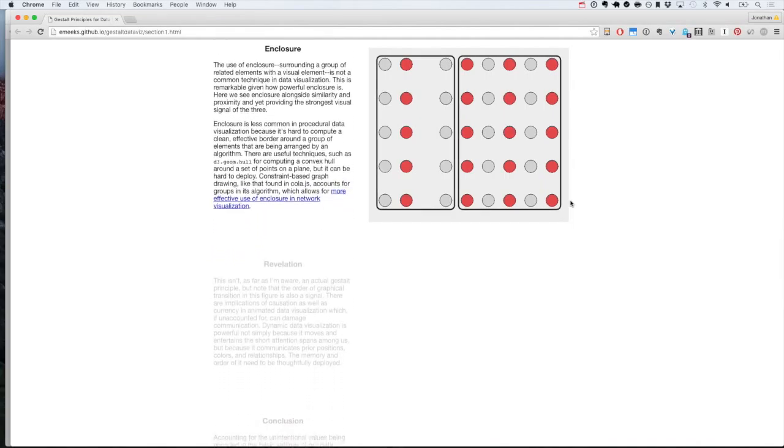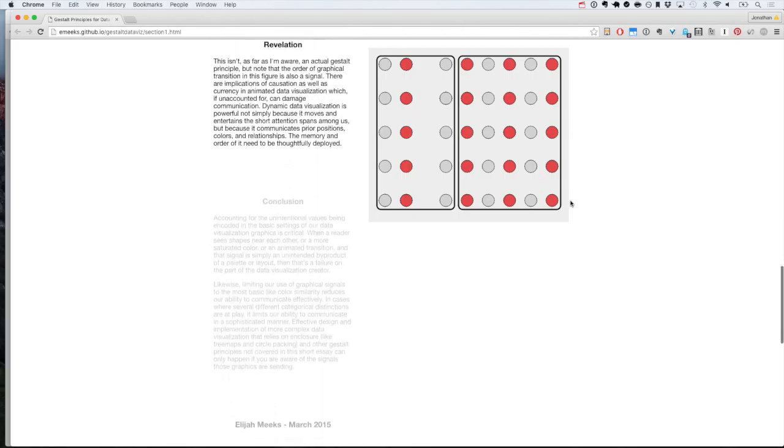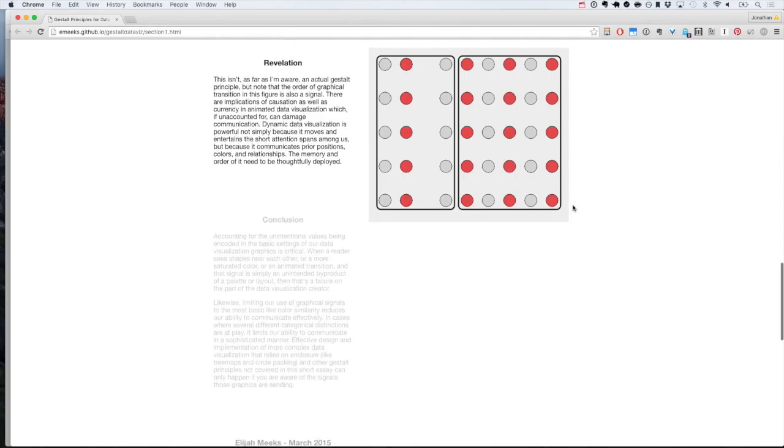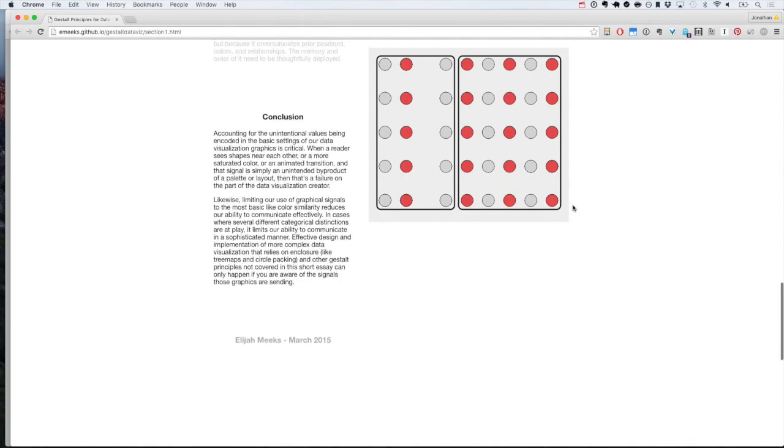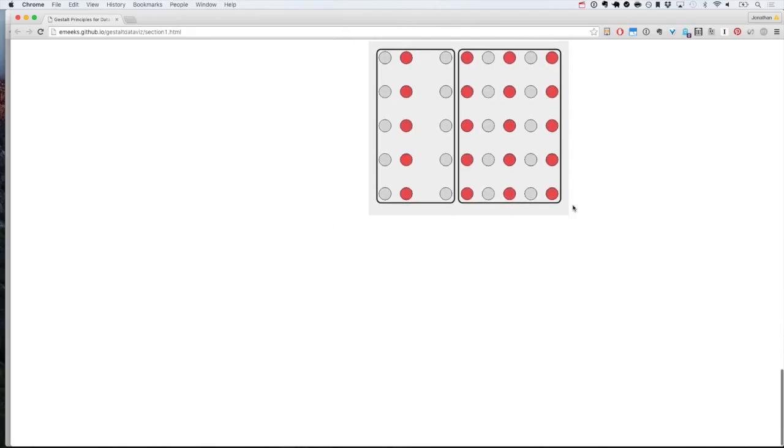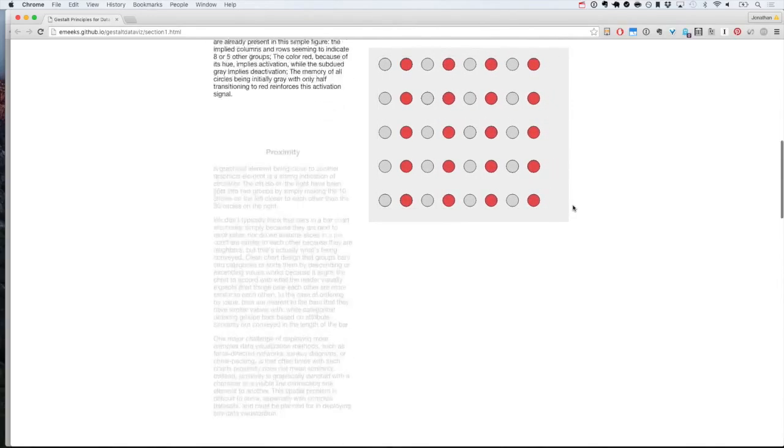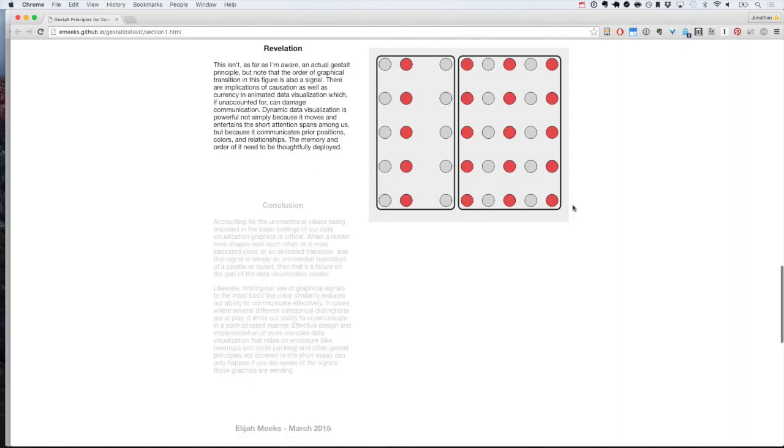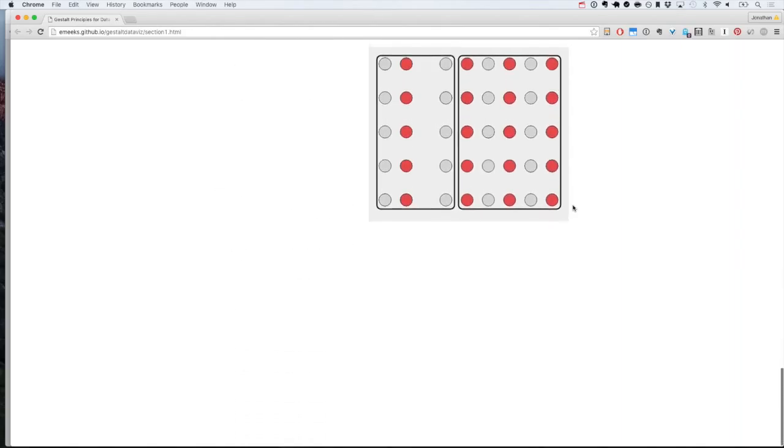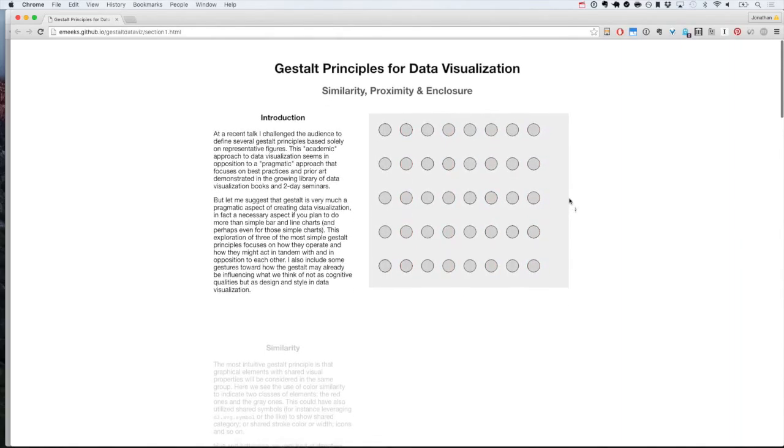There's also this idea of enclosure. So we saw that as a visual encoding. We can explicitly say, draw a box around it. What's this one? And yeah, there's a few, some of these didn't super work. But other ways to represent things as more than the sum of its parts.